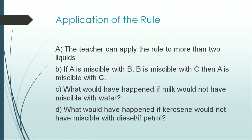Then comes the application of the rule. The teachers can apply the rule to more than two liquids — for example, if A is miscible with B, and B is miscible with C, then A is miscible with C. Questions like what would happen if milk were not miscible with water, or if kerosene were not miscible with diesel or petrol — all these answers are provided by the teacher. This is a teacher-centered approach where every time the teacher relates back to the rule stated in the beginning.